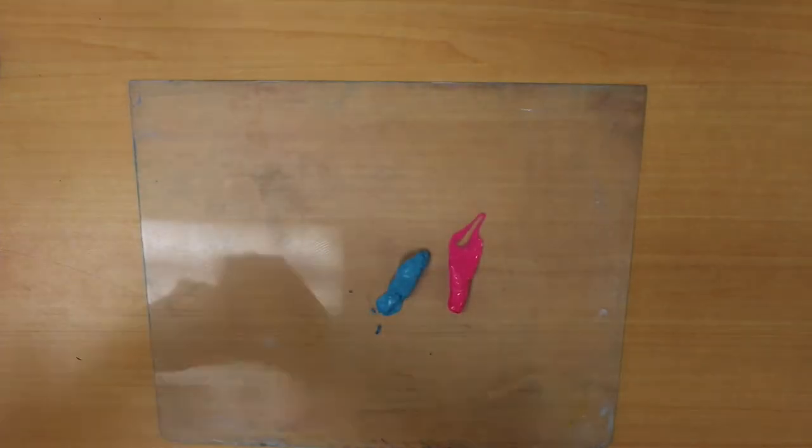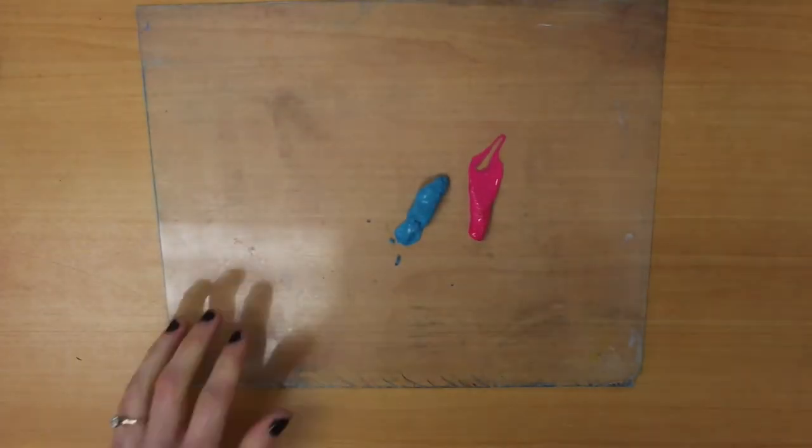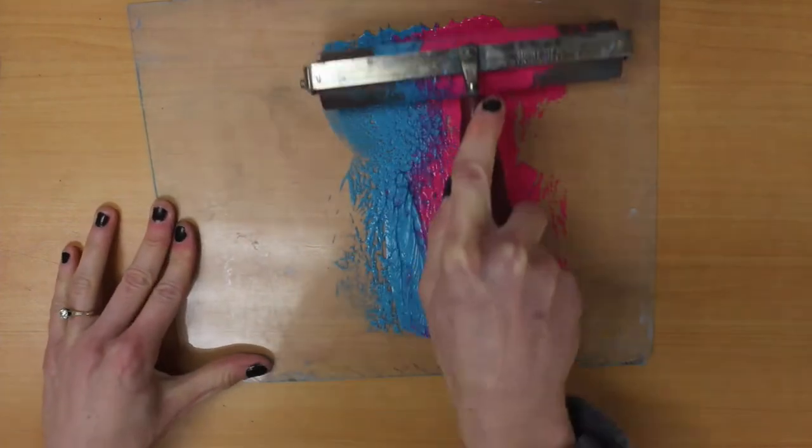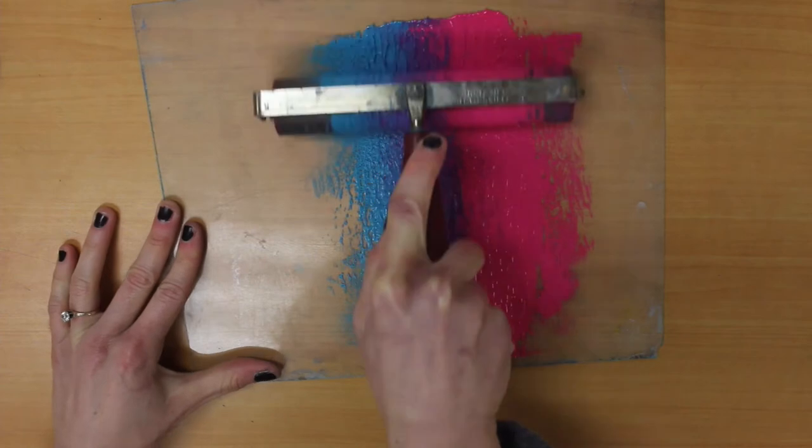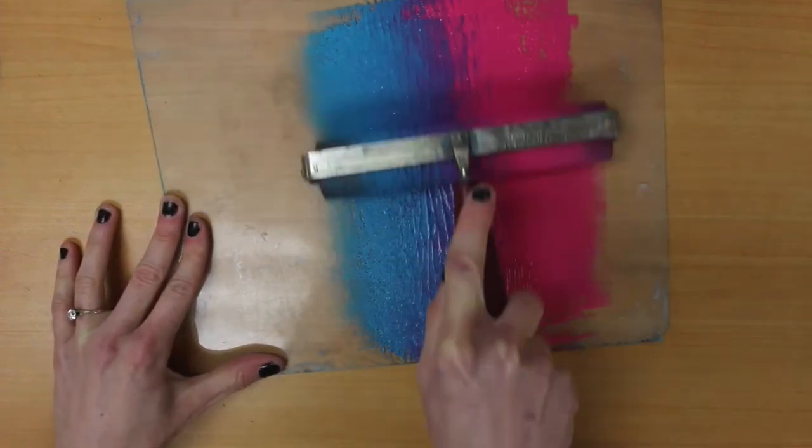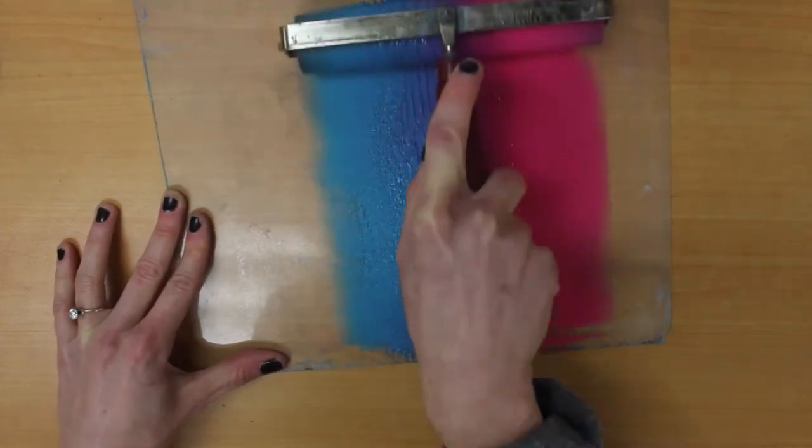And what I'm going to do is I'm going to take my brayer and I'm going to roll out the inks. Now, here's the thing. You want the consistency, which means how it looks and how it feels, to resemble a little bit more of a cat's tongue.